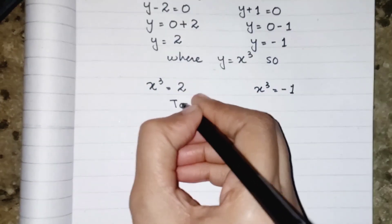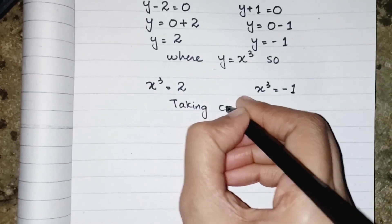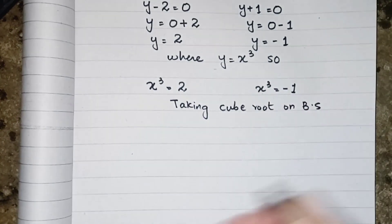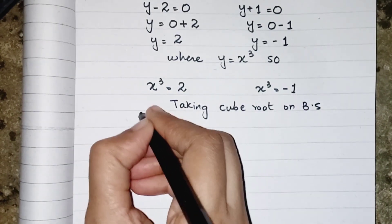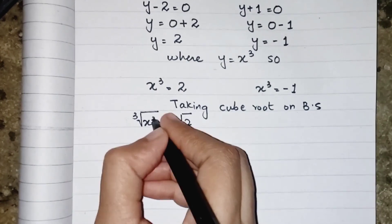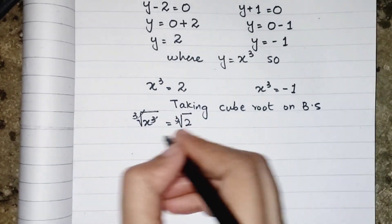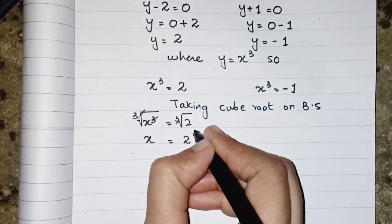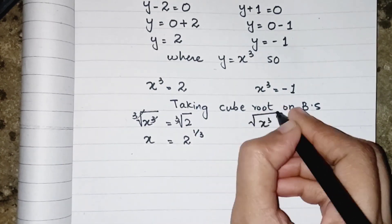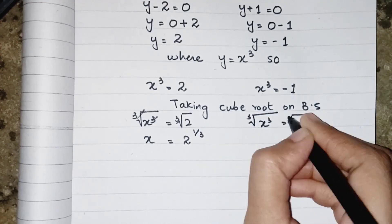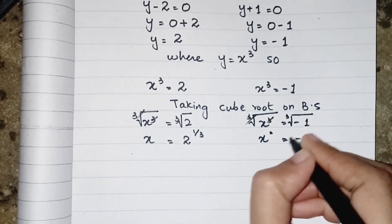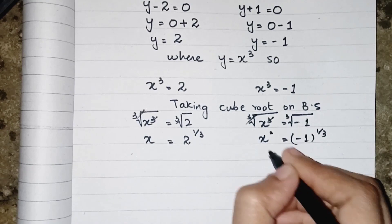So we can say that taking cube root on both sides. x cube cube root equals to 2's cube root. Cube and roots are cancelled and over here we get 2's power 1 upon 3. Similarly, on this side minus 1 cube root. So we can say that x is equal to minus 1's power 1 upon 3.